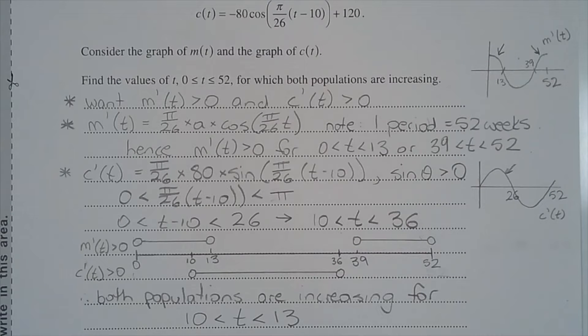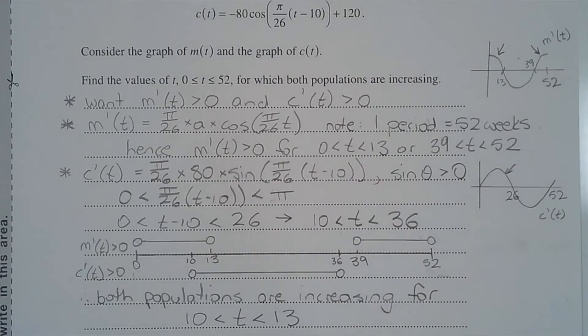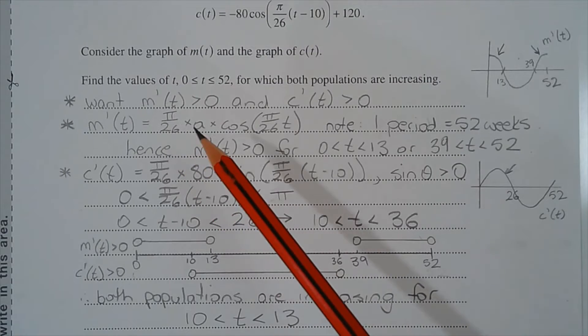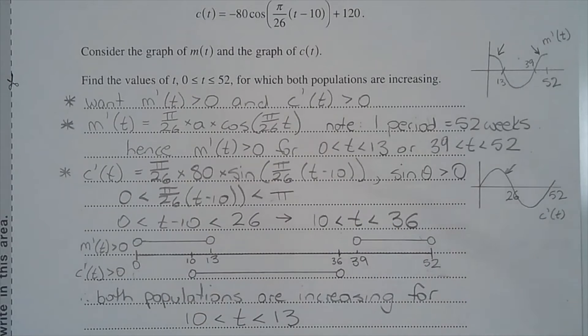A function is increasing at a point if the value of the first derivative at that point is greater than 0. We want to find values of t such that m'(t) and c'(t) are both greater than 0. Consider m'(t) or dm/dt, and that equals (pi/26) multiplied by a multiplied by cos(pi/26 times t). This is the cosine curve that's been dilated horizontally and vertically. But we're only going to consider the horizontal dilation.